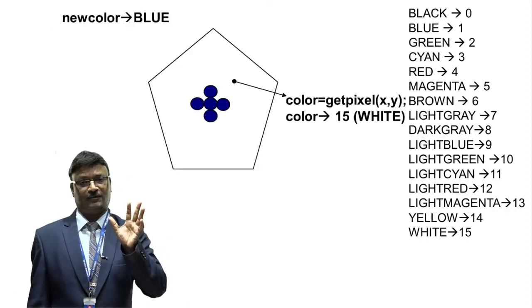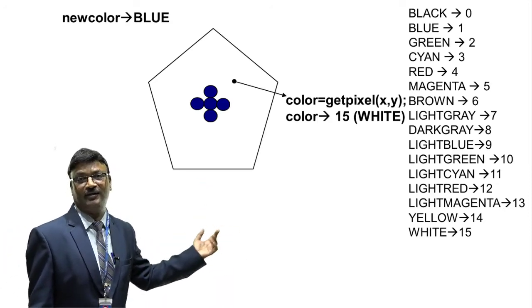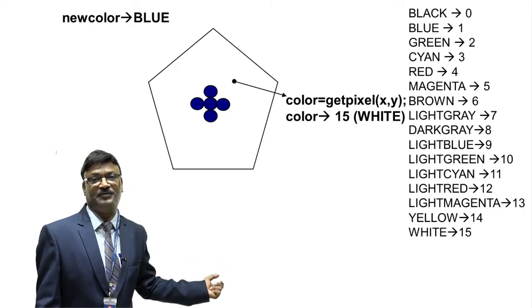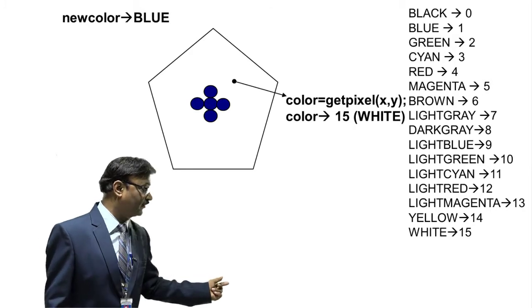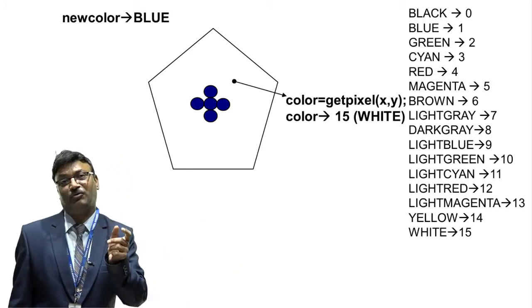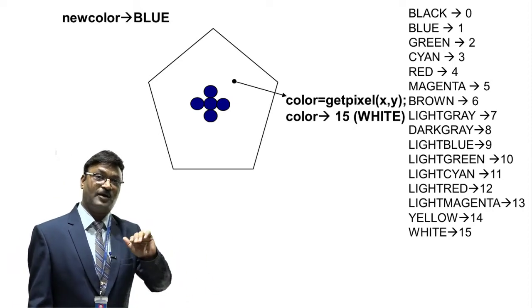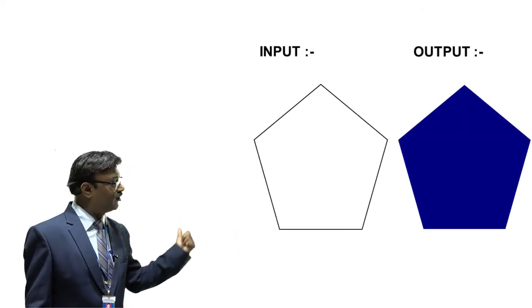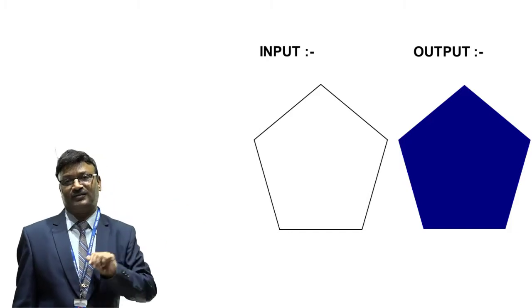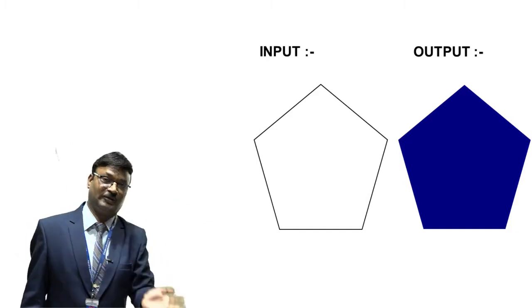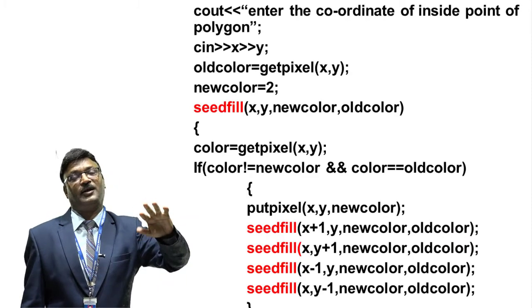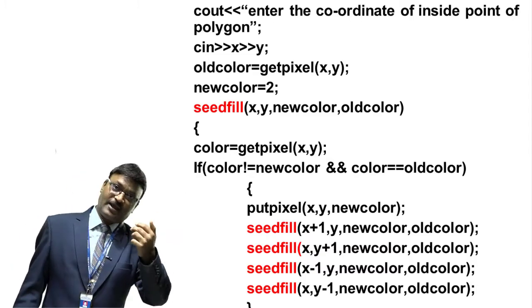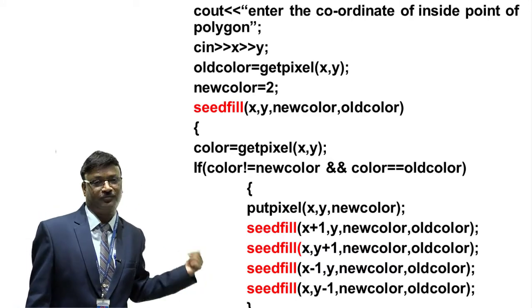Now let us look at the seed fill algorithm. I have shown different colors and neighbor pixels. Suppose I consider any pixel — getpixel returns an integer data type value. So: color = getpixel(x, y), where x and y are the two parameters passed to getpixel. For putpixel, you pass three parameters: x, y, and color. This input polygon becomes the output polygon after filling. The seed fill algorithm works using a recursive method, meaning the function calls itself within the function.